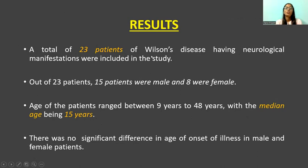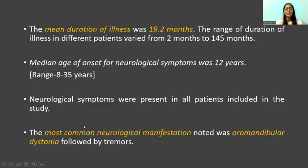A total of 23 patients of Wilson's disease having neurological manifestations were included, out of which 15 patients were male and 8 were female. The median age of patients was 15 years and the mean duration of illness was 19.2 months. Median age of onset for neurological symptoms was 12 years. Neurological symptoms were present in all patients, with the most common manifestation being oromandibular dystonia followed by tremors.